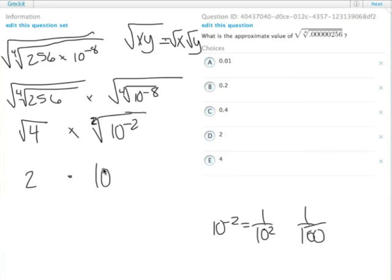that's 2 times 10 to the negative 1. And 10 to the negative 1 times anything is just moving the decimal point 1 to the left, so we end up with 2, move it 1 to the left, it's 0.2. The answer is choice B.